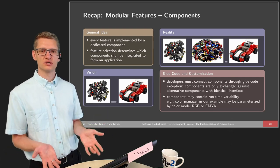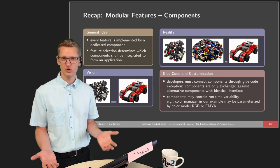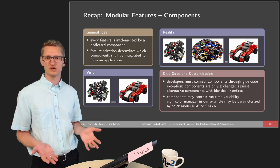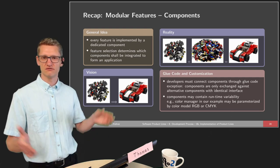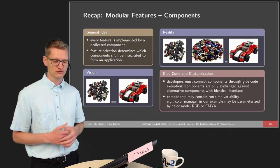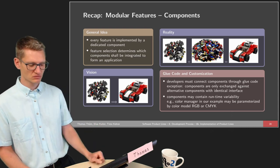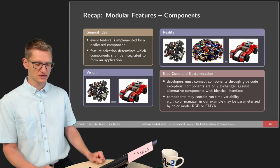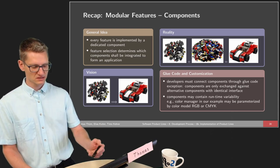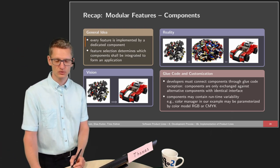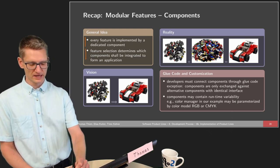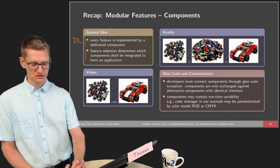The main problem with conditional compilation was that features were not modular. So why not use basic software engineering constructs to produce modular software? The basic construct invented decades ago is components. The general idea for implementing product lines with components is: every feature is implemented by a dedicated component, and feature selection determines which components shall be integrated to form an application. This is basically domain engineering — we build components and then write glue code in application engineering to connect those systems.